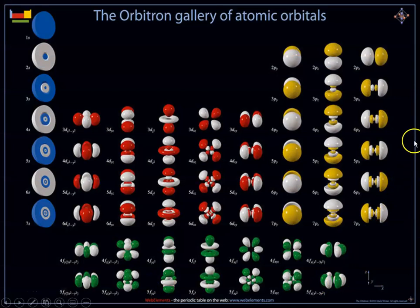This is what I call the orbitron gallery of atomic orbitals. This is showing you what S orbitals look like, what P's look like, what D's look like, and what F's look like. We'll talk about that a little bit more as we move forward.